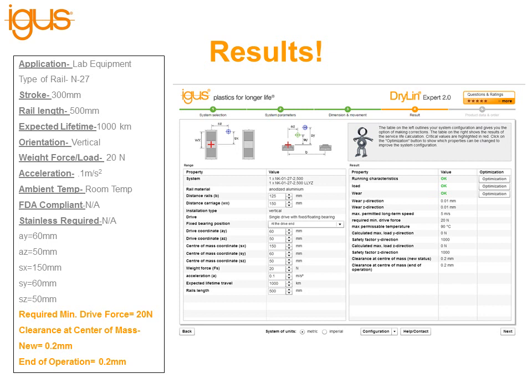On this page you'll see the whole reason we're doing this — the required minimum drive force, which in this case is 20 newtons, and the clearance at center of mass: 0.2 millimeters in new condition and 0.2 at end of operation. The expected lifetime shows the 1000 kilometers we entered. To see the maximum lifetime, just keep increasing the expected lifetime of travel number until it says 'limit reached,' then click Next.